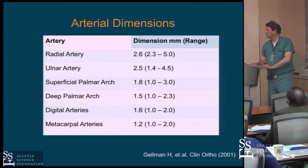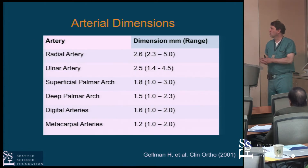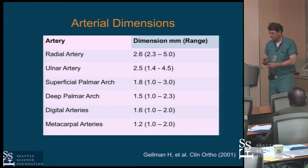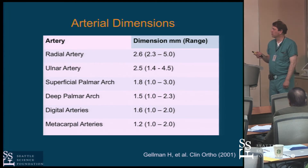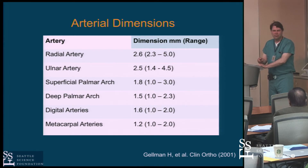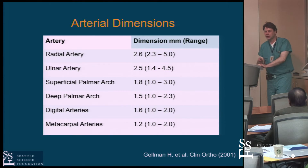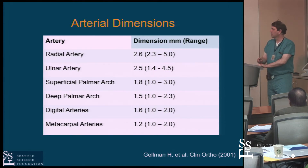The radial artery, in general, the range obviously varies by the size of the patient, but on median it's about 2.6 millimeters in size. So if you think about what a six French sheath looks like, most patients can accommodate a six French sheath for access.